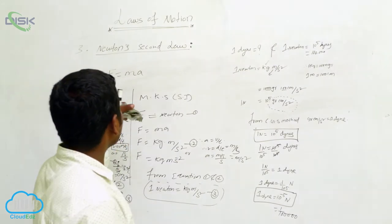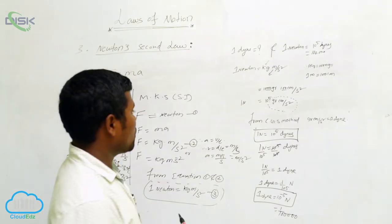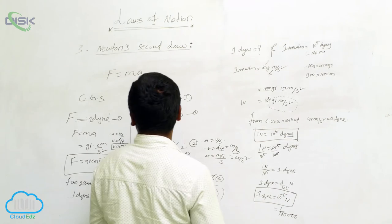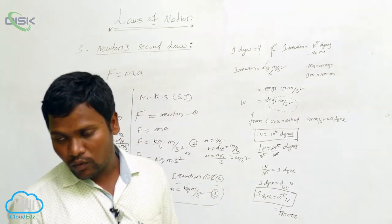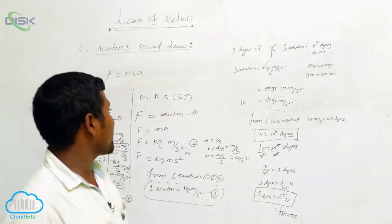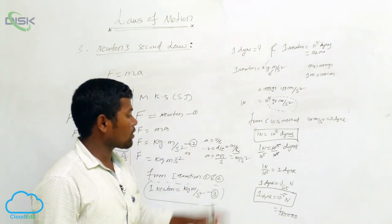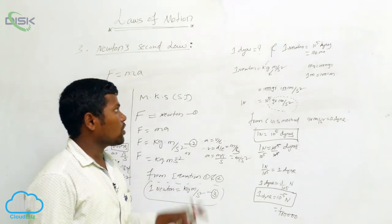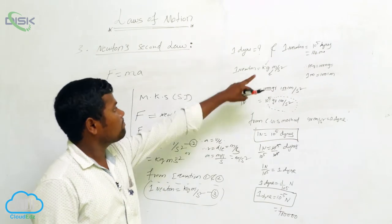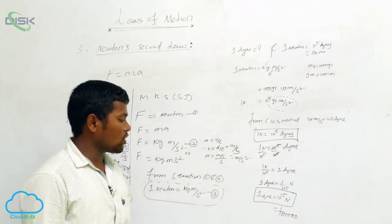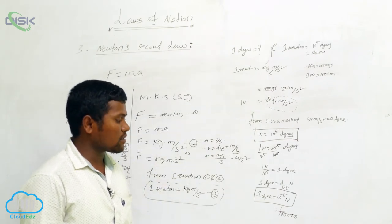These are the measurements of force. What is the CGS measurement for force? Dynes. MKS measurement for force? Newton. 1 newton equals 10 to the power of 5 dynes. 1 dynes equals 10 to the power of minus 5 newtons.